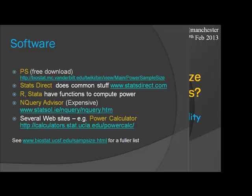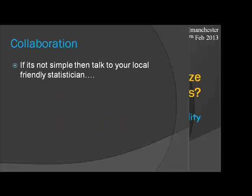That's my philosophy. I haven't given you any formulas because there are lots of calculators and you don't need to know the formulas. My favourite at the moment is a free download called PS. StatsDirect is on some of the university servers and does some of the common stuff. R and Stata have functions in them — Stata's command is SAMPSI. There's also commercial software which is very expensive, and there are websites too. These slides will be available online with all the links. If it's not simple, you can talk to your local friendly statistician. Thank you.